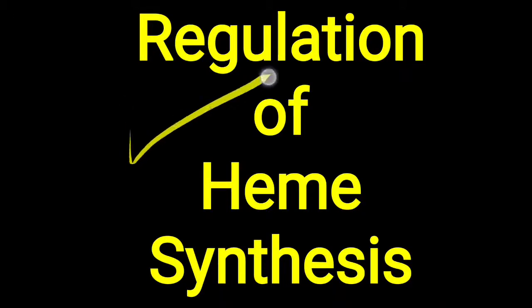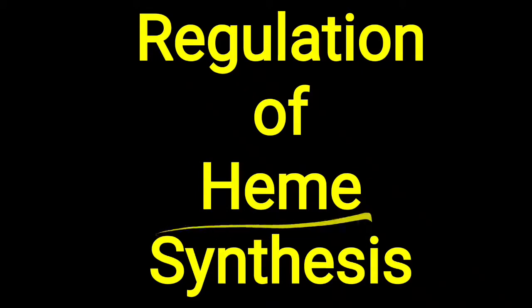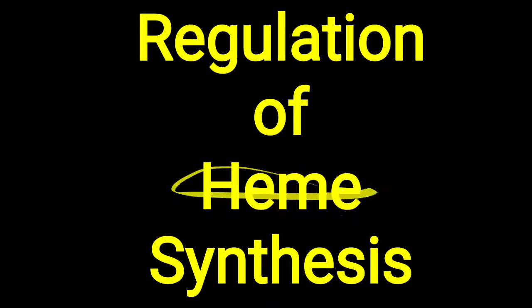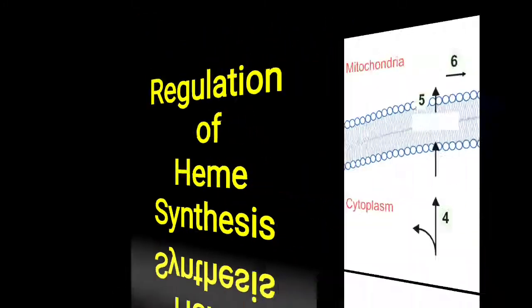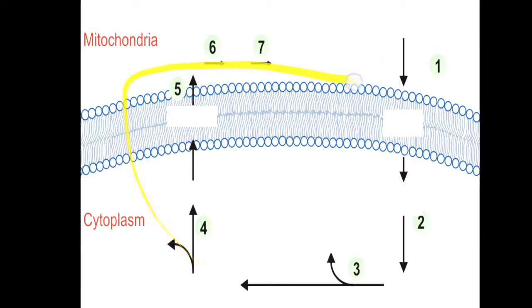Hello friends, today's topic is about regulation of heme synthesis. We have already discussed how heme is synthesized in our body. Heme is needed for hemoglobin, myoglobin, as well as cytochrome P450. We will learn how exactly heme is regulated, but before that we will do a quick review of how heme is synthesized.